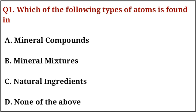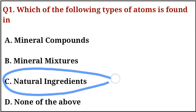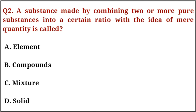The first question is: which of the following types of atoms is found? The correct answer is option number C, that is natural ingredients. Question number two: a substance made by combining two or more pure substances in a certain ratio with the idea of mere quantity is called. The correct answer is option number B, that is compounds.